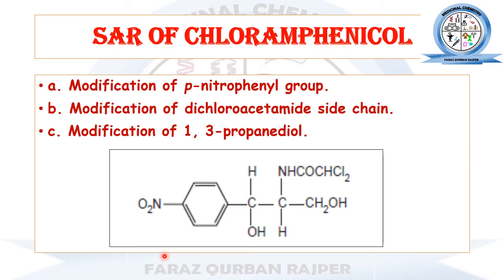Now let's discuss the structure-activity relationship of chloramphenicol. I have divided the chemical structure of chloramphenicol into three different regions: one is the para-nitrophenol, the second is the dichloroacetamide side chain, and the third is the 1,3-propanediol. This is the chemical structure of the chloramphenicol antibiotic.